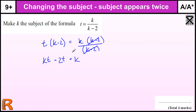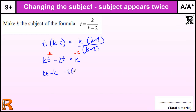Then we take the K over to the other K, and the 2T over to this side. So I'm going to subtract K from both sides — take away K from this side, take away K from that side. And that gives me KT minus K minus 2T equals 0.